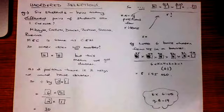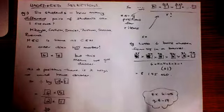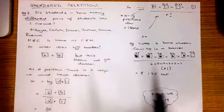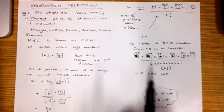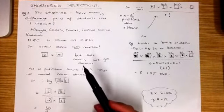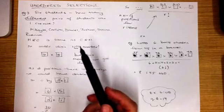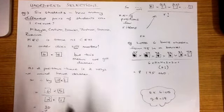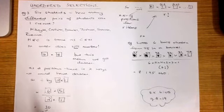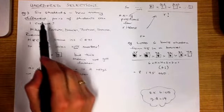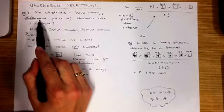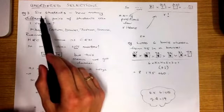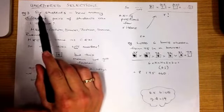Now, unordered selections. This is where we are going to use the word combination, because we are looking at putting things together and it doesn't matter what order they come in — what we are looking at is different combinations. So let's look at an example.